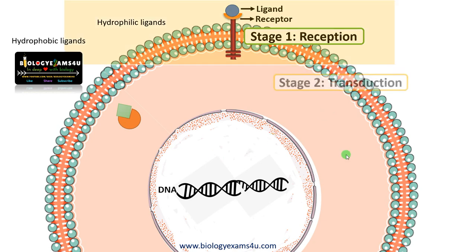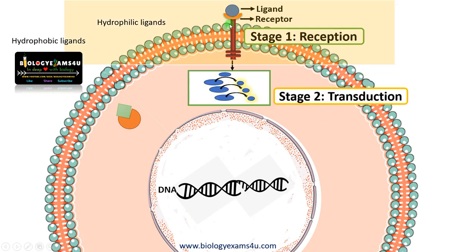Stage 2 is called transduction. Upon binding of ligand to the receptor, this domain of the receptor is activated. Then this is followed by sequential activation of many signaling molecules inside the cell, one after other — often by phosphorylation, that means addition of phosphate by kinase enzyme.